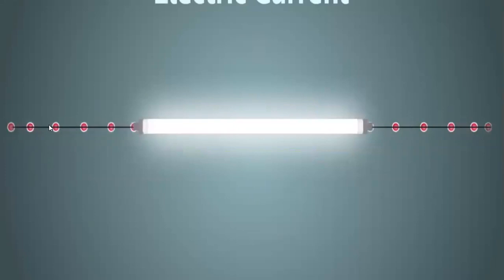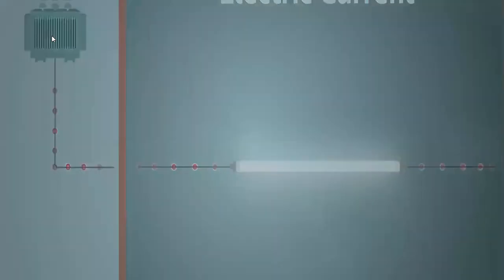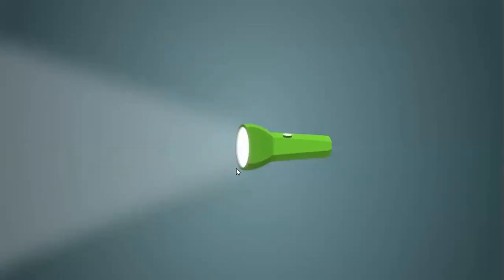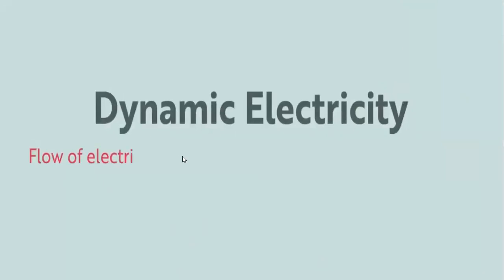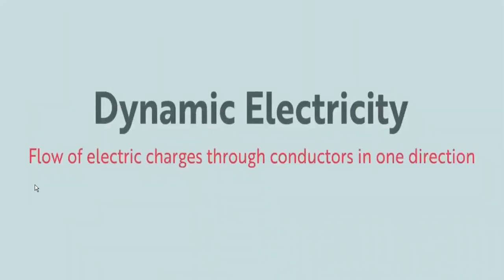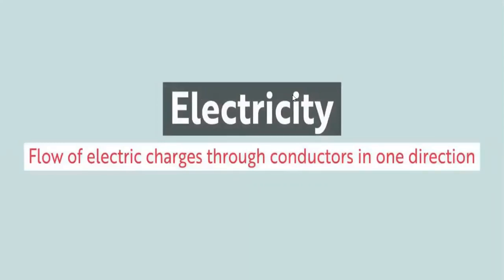The charges move in one direction in the wires due to the energy supplied by the transformer. The transformer transfers energy causing charges to move in one direction. Dynamic electricity — the flow of electric charges through a conductor in one direction — is called electricity.